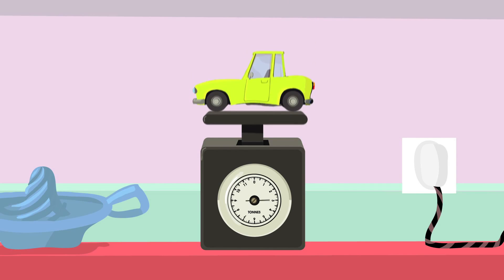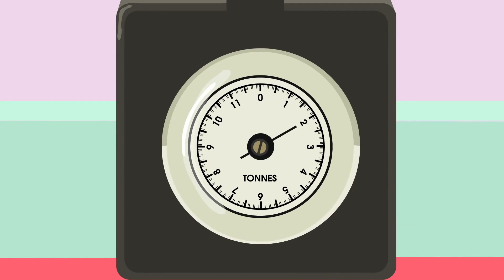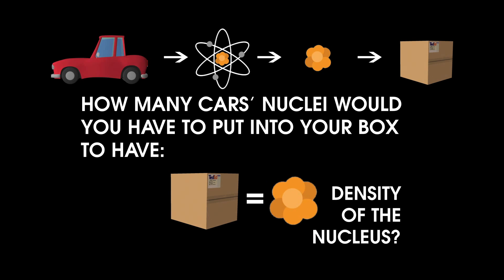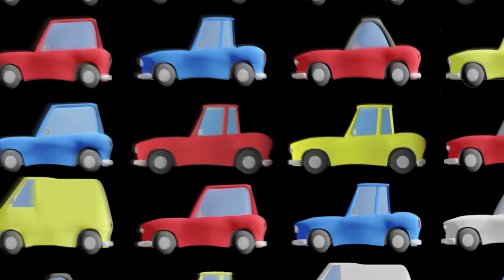And let's go and grab all of the nuclei from a typical car. Now cars on average weigh two tons. How many cars' nuclei would you have to put into the box to have your one foot box have the same density of a nucleus? Is it one car? Two? How about a hundred?